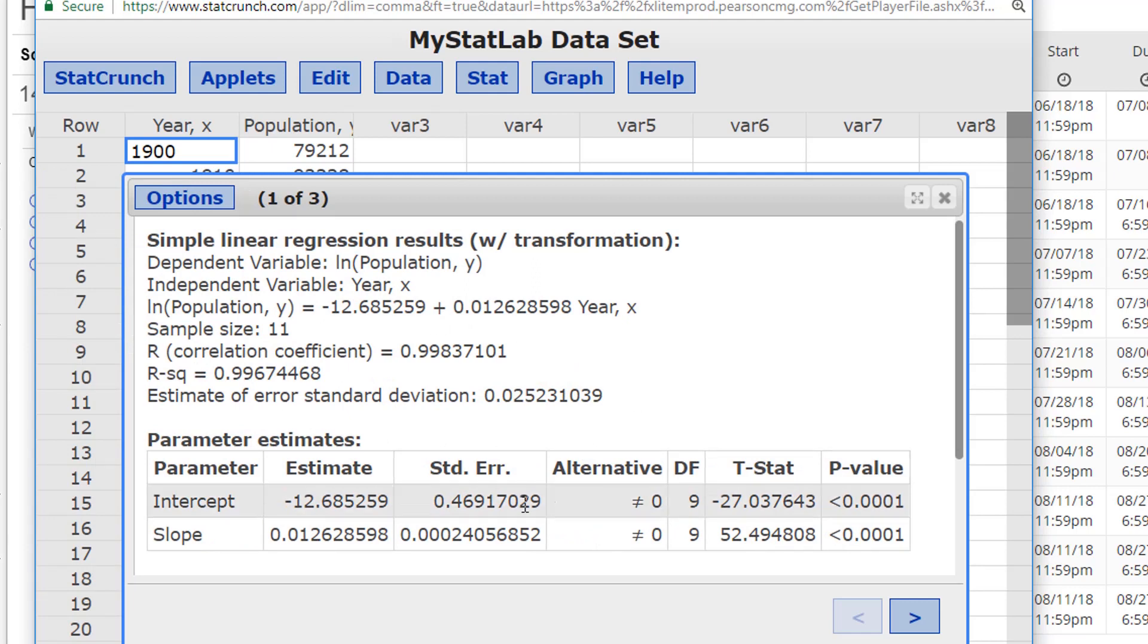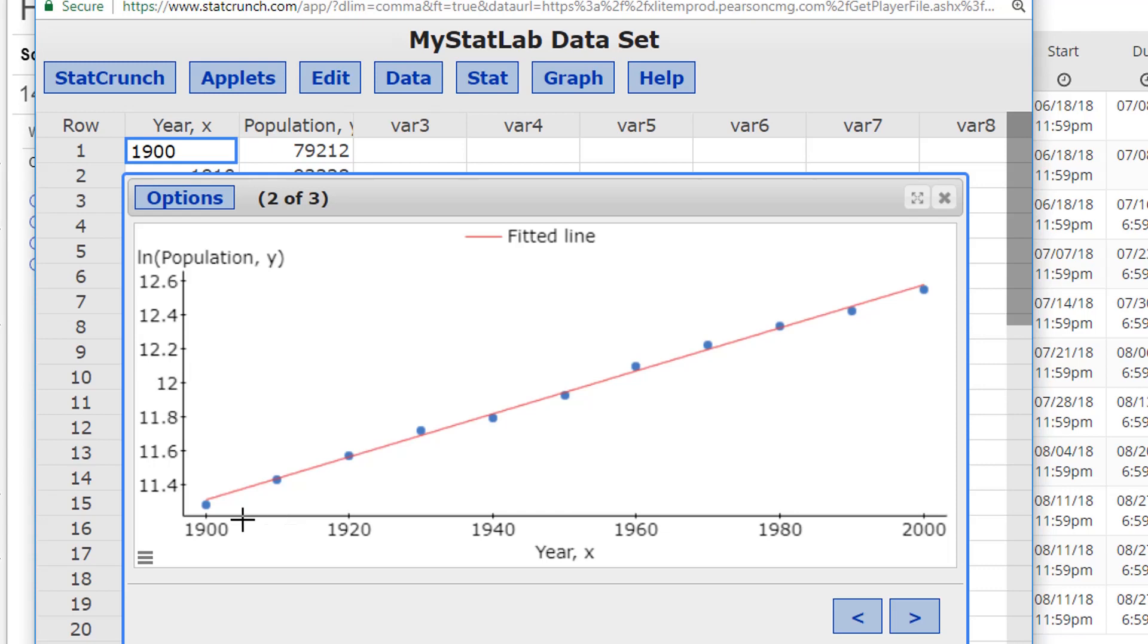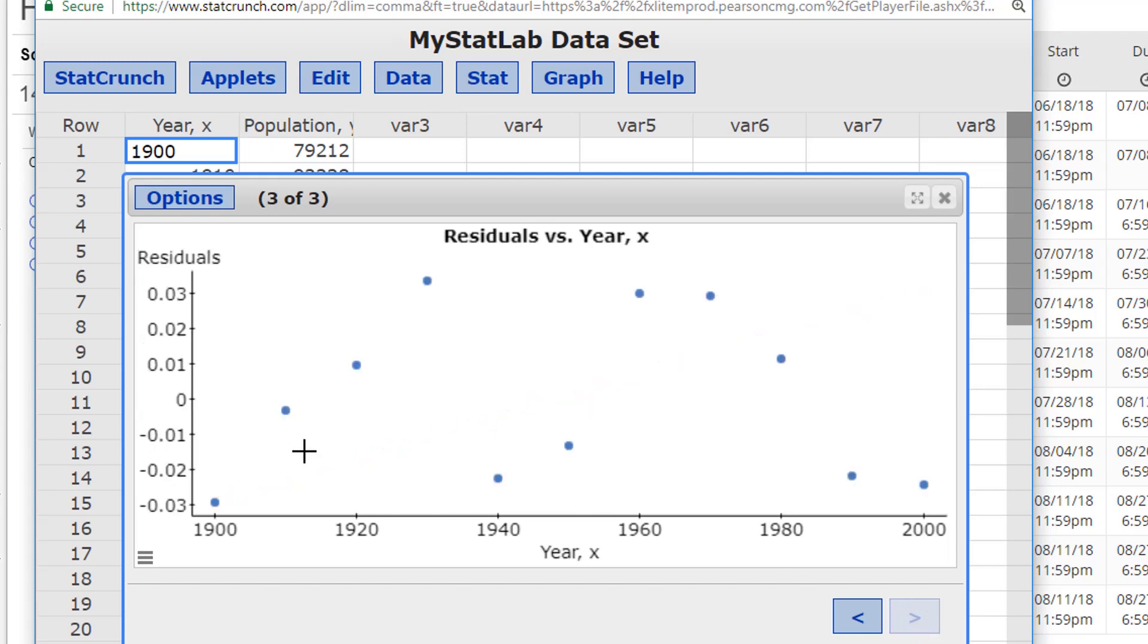We've got a different equation because this is how does the natural log of population change as a function of time. If you want to find out what the population is, then you just take e to the power of this whole right-hand side and that would be your population estimate. But don't worry about that. We wanted to see how the picture changes, the scatter plot. If a log transformation makes the scatter plots much better, the fitted line, this looks like a good fitted line. The other one looked okay too, but let's look at the residual plot. The residual plot is much more of a scatter.